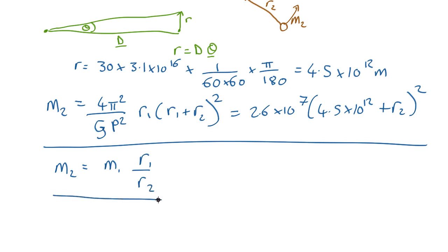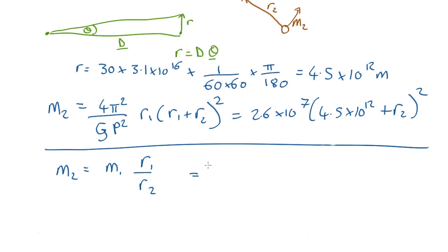Once again it's not an equation that will tell us anything because it's got two unknowns. We know r1 and m1, we don't know either of these. If you put numbers in that comes out as 9 by 10 to the 42 over r2.